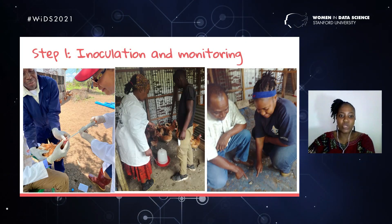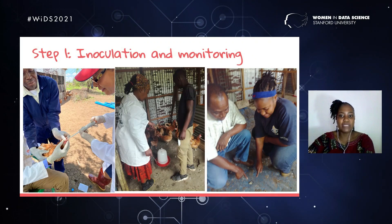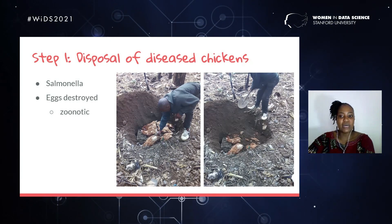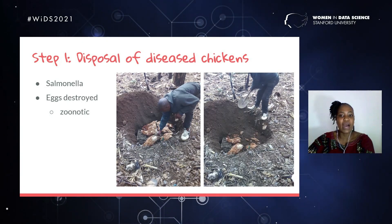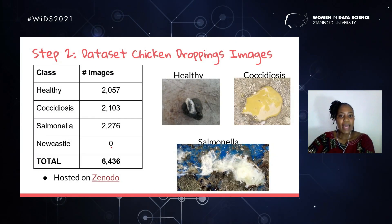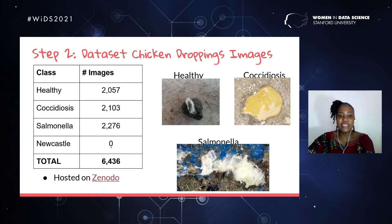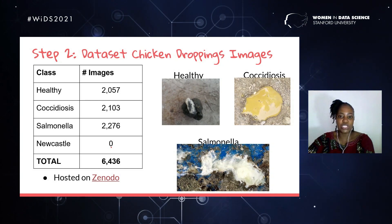We inoculate for Salmonella; the healthy and coccidiosis classes were collected from farmers. We monitor the progress of these diseases after inoculation, and ethically we dispose of the diseased chickens properly to prevent spread to other farms. We have managed until today to collect a dataset of 6,436 images of chicken droppings, which is our dataset. It is hosted on Zenodo, freely open to the research community. We can see distinct images of healthy, coccidiosis, and Salmonella classes.